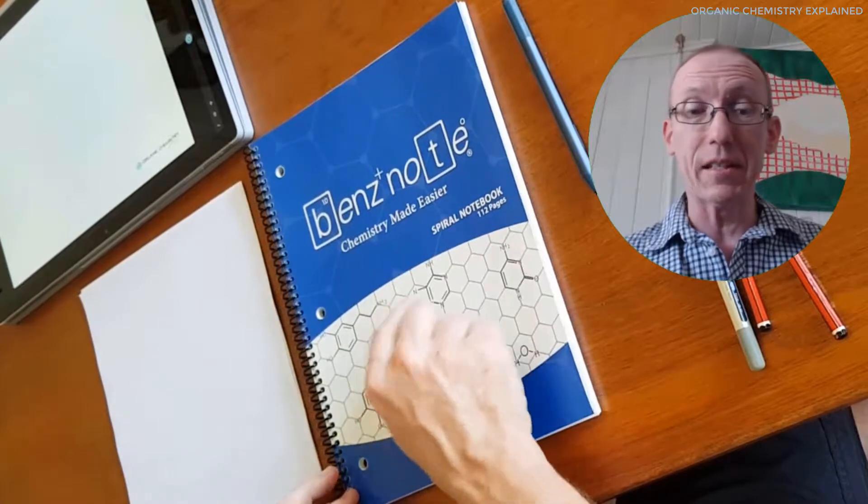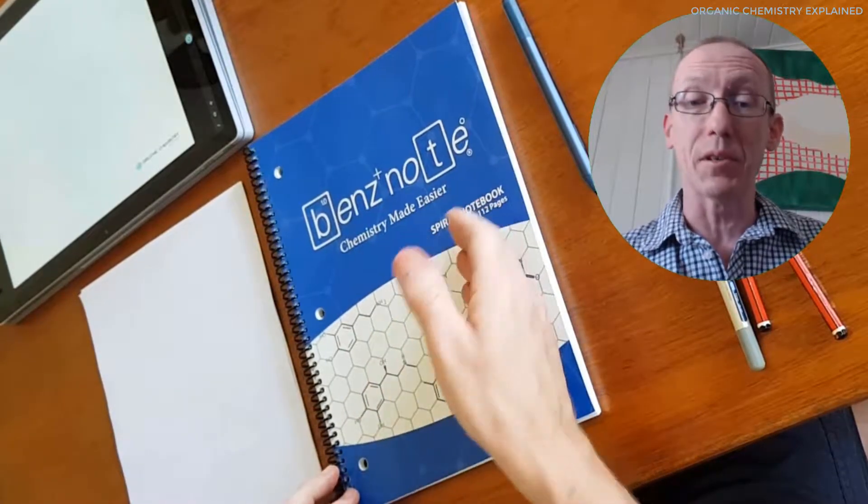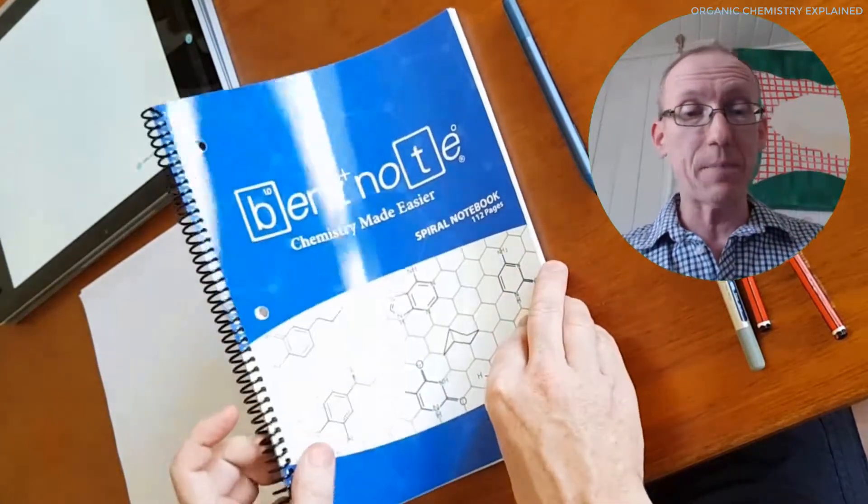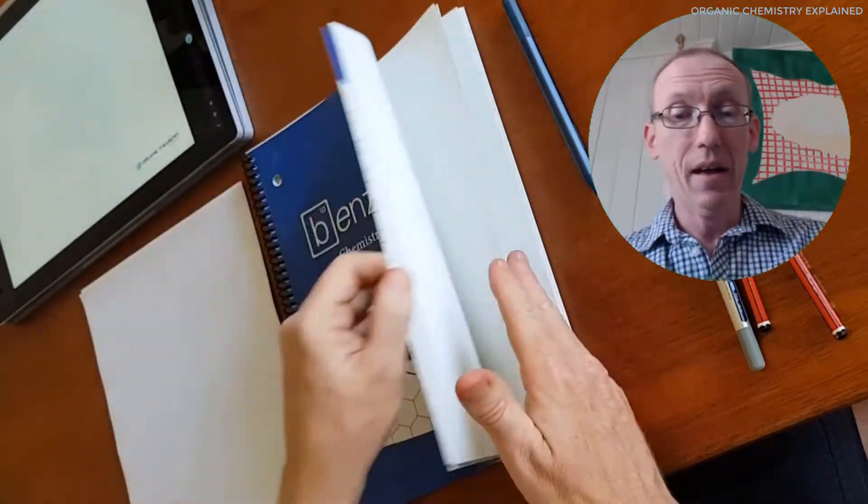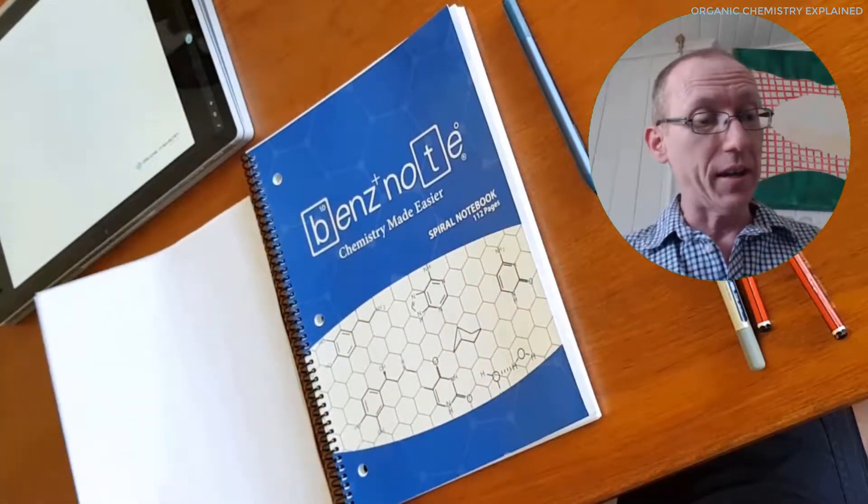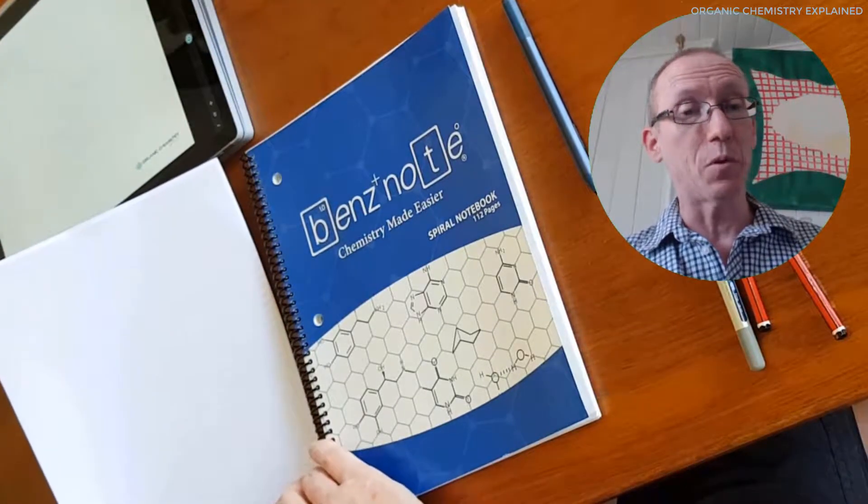Now I've got two options here. One is Ben's Note, so this is available online. You can get it from amazon.com and it is a spiral bound notebook that has a hexagonal grid pattern and then the other option I've got here is a product that I've developed called ChemPaper.